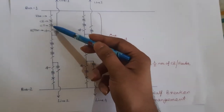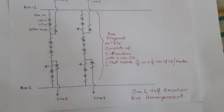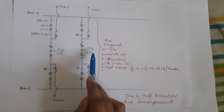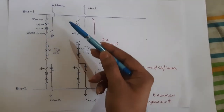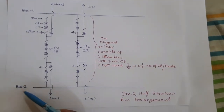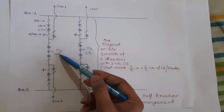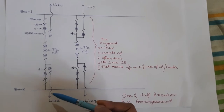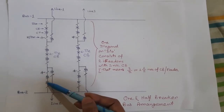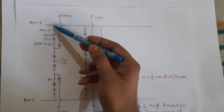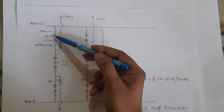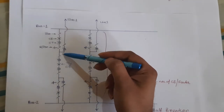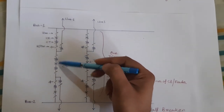Six CTs are used per diagonal. Now, what is a tie breaker? This breaker is called the tie breaker, and it is used to couple bus 1 and bus 2. The tie breaker can also be used to divert the load of any line during a fault in the concerned circuit breaker. Suppose line 1 is connected through a circuit breaker — due to a fault in that circuit breaker, load of line 1 will be diverted through the tie circuit breaker.